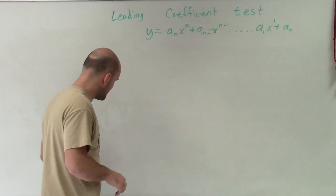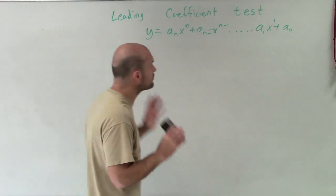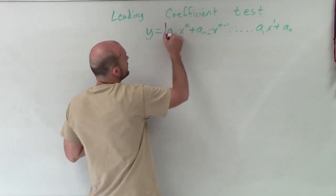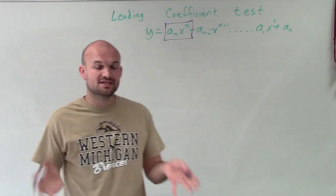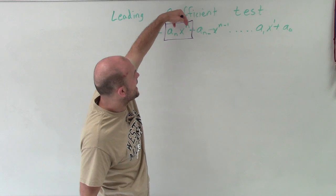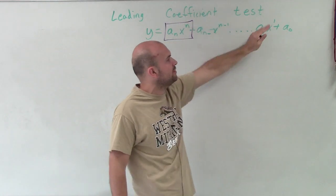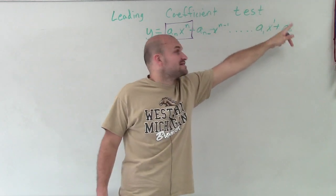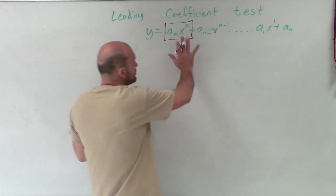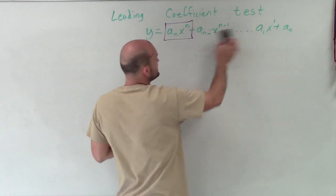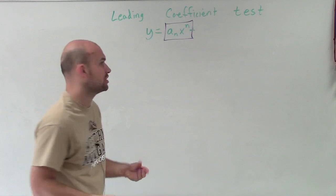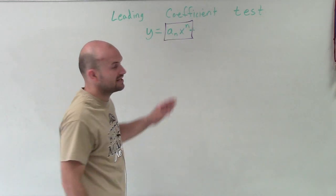When dealing with the leading coefficient test, we're really not going to be concerned with every single part of the polynomial, but only what we call our leading term. That is going to be our first term when our polynomial is in descending order. Notice how the exponents go from n, down to n minus 1, and keep going all the way down to x to the first and x to the zero. So we're only concerned about our first term — that's our leading term.